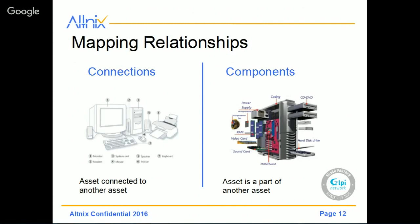The second concept of a relationship is Components. In this scenario, the asset can be a part of another asset — it's called a component. For example, if you open up your desktop PC, you are going to see your motherboard, sound card, video card, network card, and maybe hard disks and DVD-ROMs, and so on. All of these components are basically assets which are part of another asset. So you can maintain information about each of the components as well as the final asset, which is your PC.